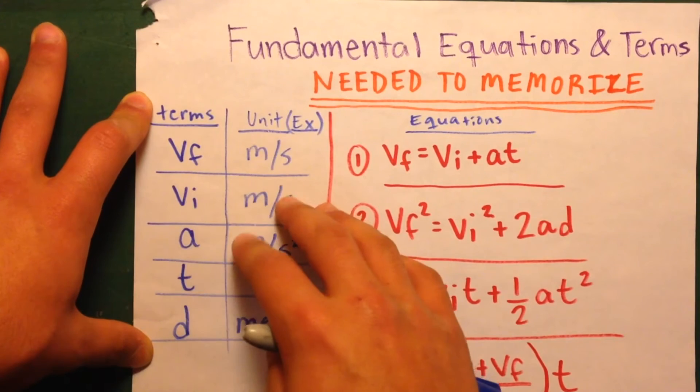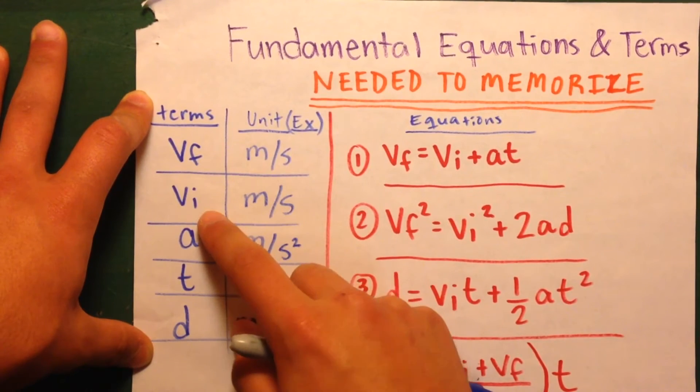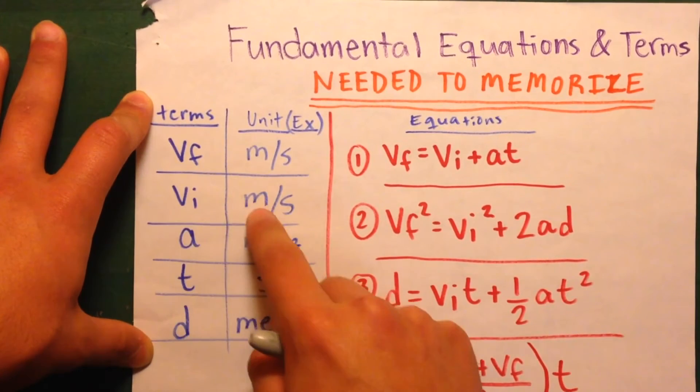VI means the initial velocity, I for initial, V for velocity, an example meters per second.